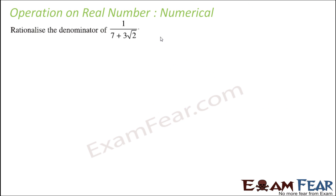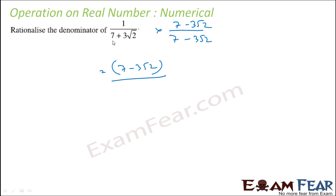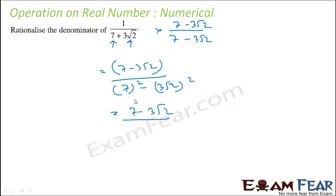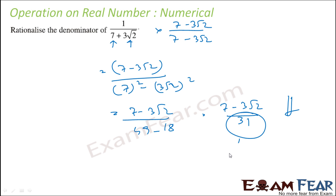Let us take one more and rationalize it. This is also an a plus b form, so we will multiply by the a minus b form. What you get is 7 minus 3 root 2, and the denominator becomes a squared minus b squared — that is 7 squared minus (3 root 2) squared. 7 squared is 49, and 3 squared into root 2 squared is 9 into 2, which is 18. So 49 minus 18 is 31, and 31 is a rational number. The denominator is rationalized.